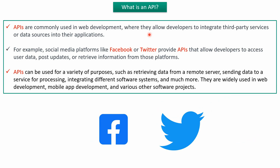APIs are commonly used in web development, where they allow developers to integrate third-party services or data sources into their applications. For example, social media platforms like Facebook or Twitter provide APIs, and using those APIs, developers can access user data, post updates, or retrieve information from those platforms. APIs can be used for a variety of purposes like retrieving data from a remote server, sending data to a service for processing, integrating different software systems, and much more.